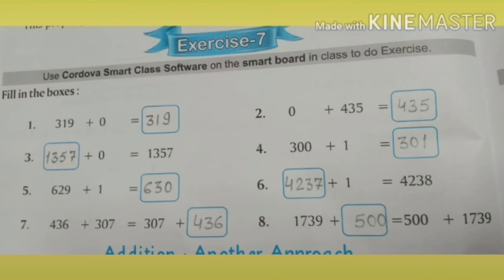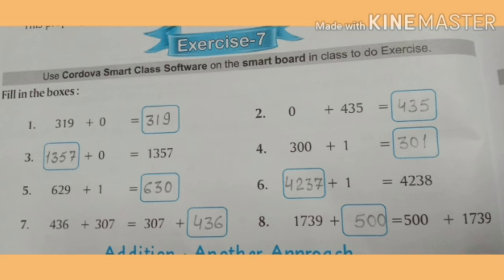Now do Exercise 7 in your book — it is fill-in-the-boxes. जैसे कि आपने अभी properties को समझा, उसी के according आप इस exercise को complete करेंगे। चलिए एक question बता देती हूँ — first question: 319 plus 0. So what will be the answer? What will we write in the box? Yes — 319. Very good.